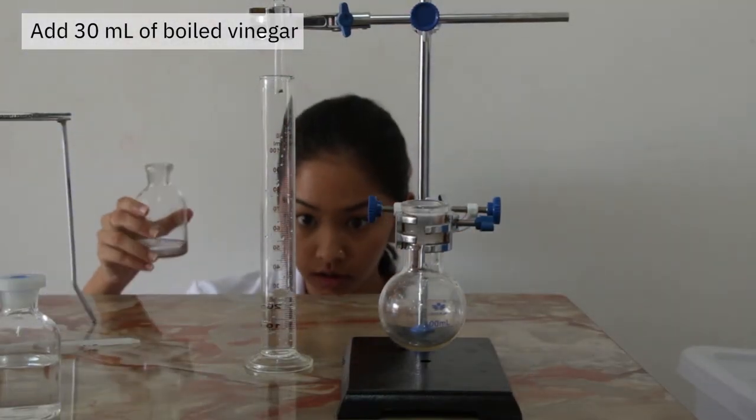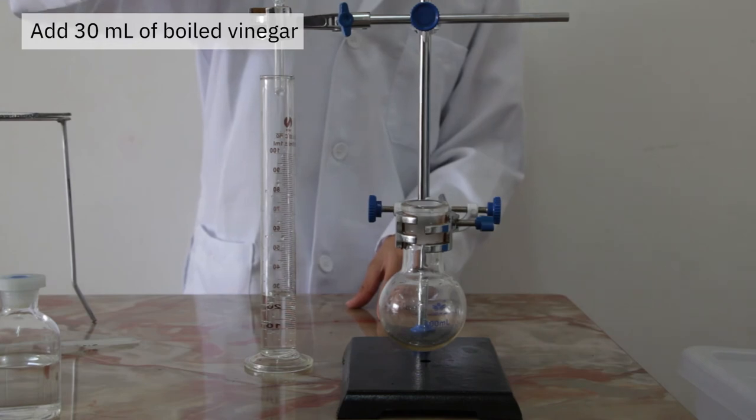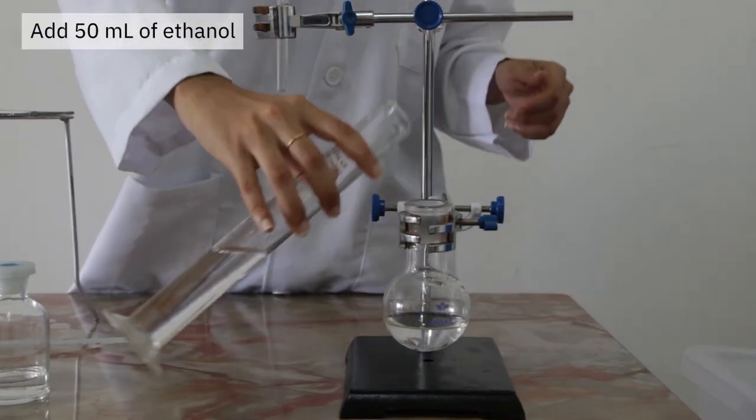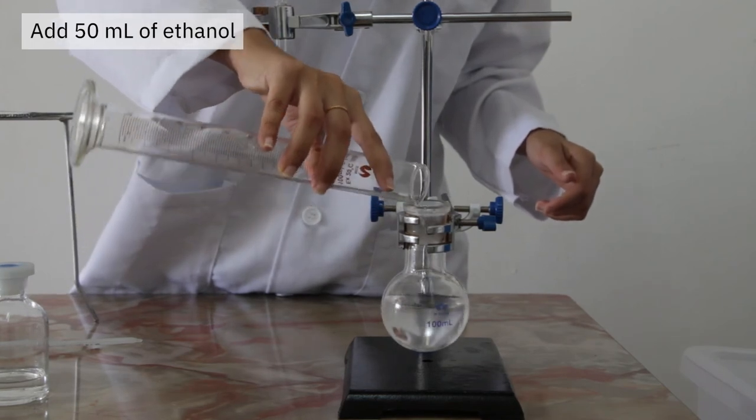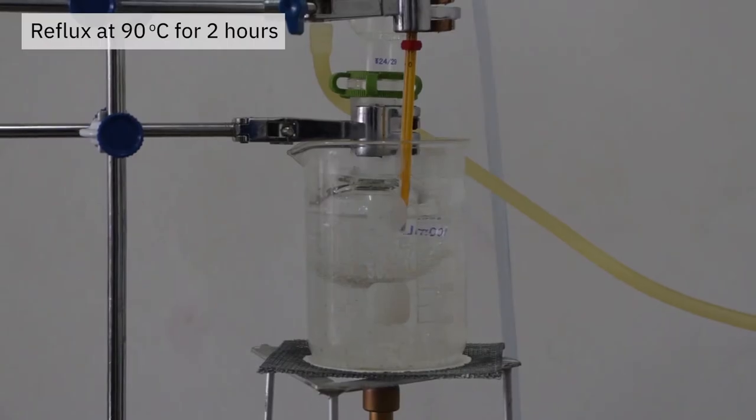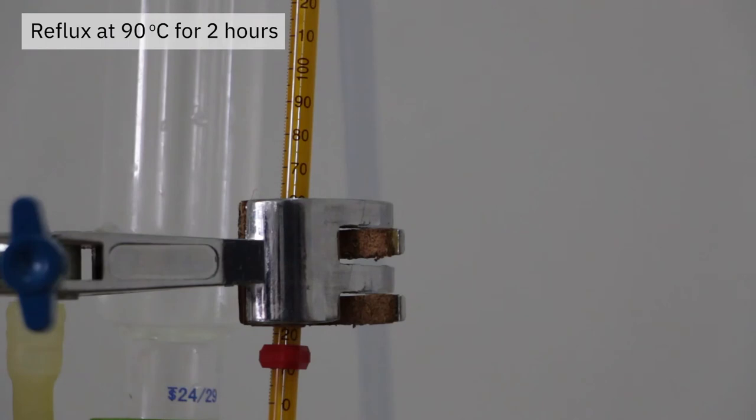30ml of the boiled vinegar solution is measured and added to a round-bottom flask. Then, 50ml of the ethanol solution is added too. The reflux apparatus was set up as shown. The water bath is heated and the temperature is maintained at 90 degrees Celsius for 2 hours.